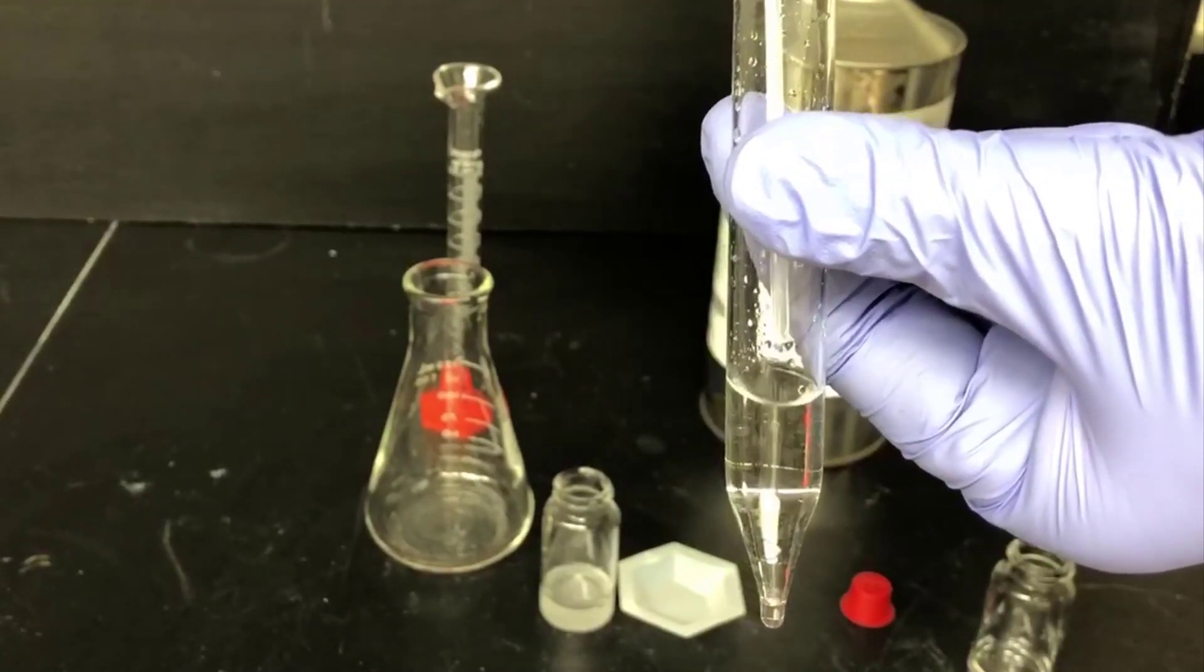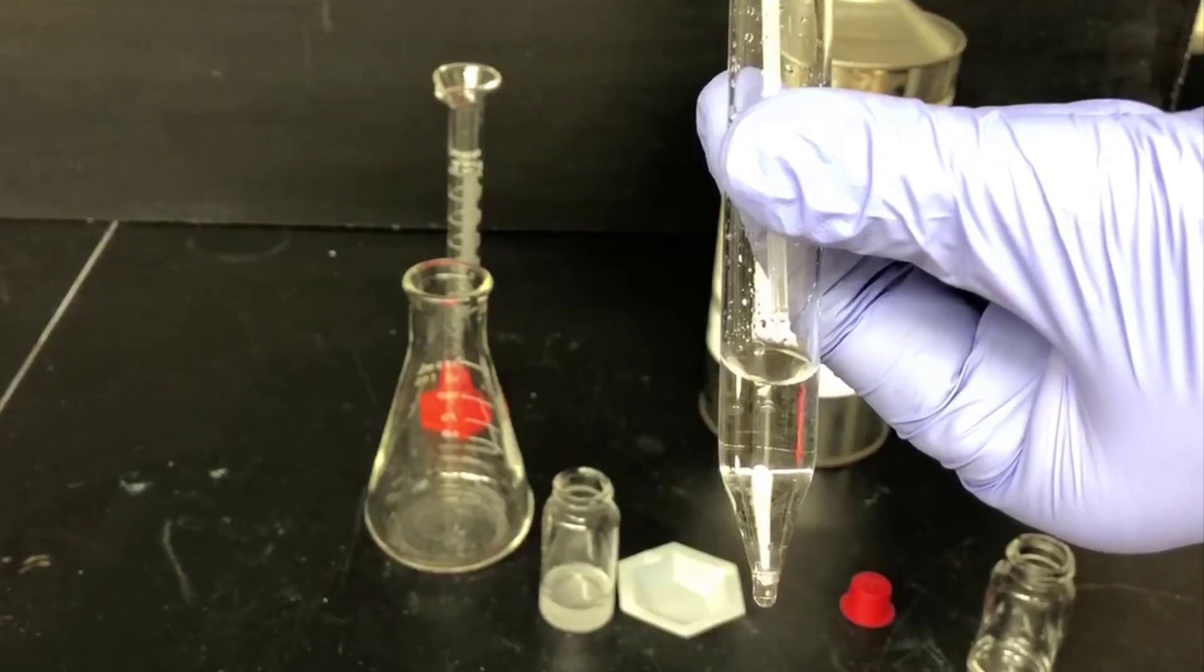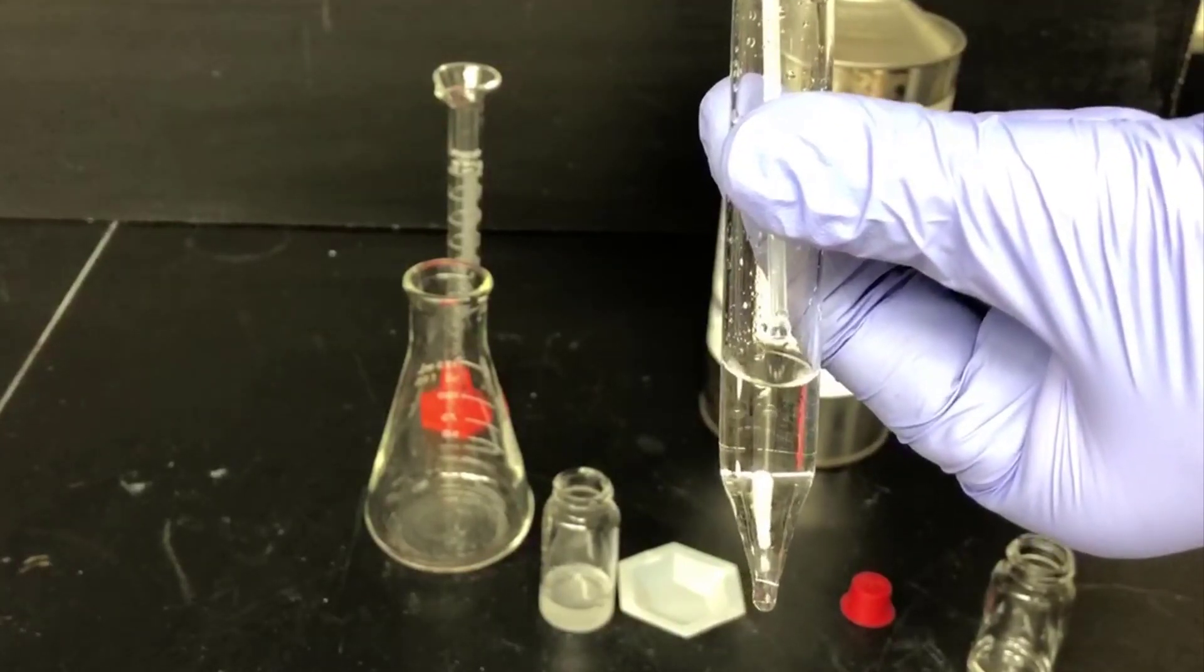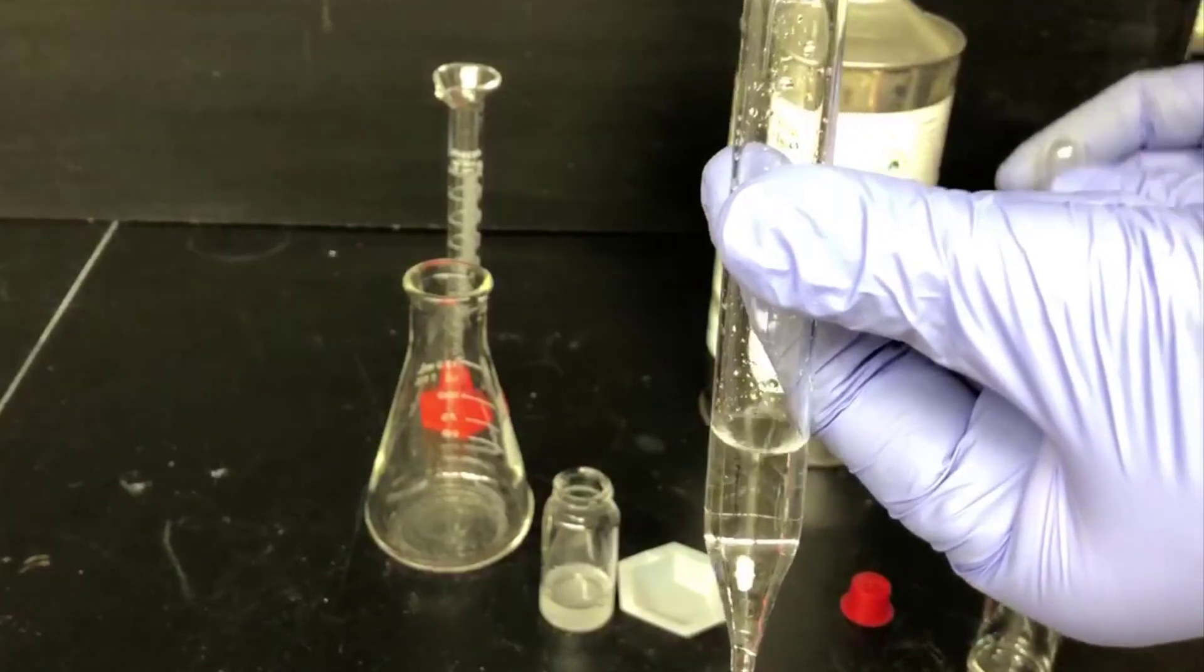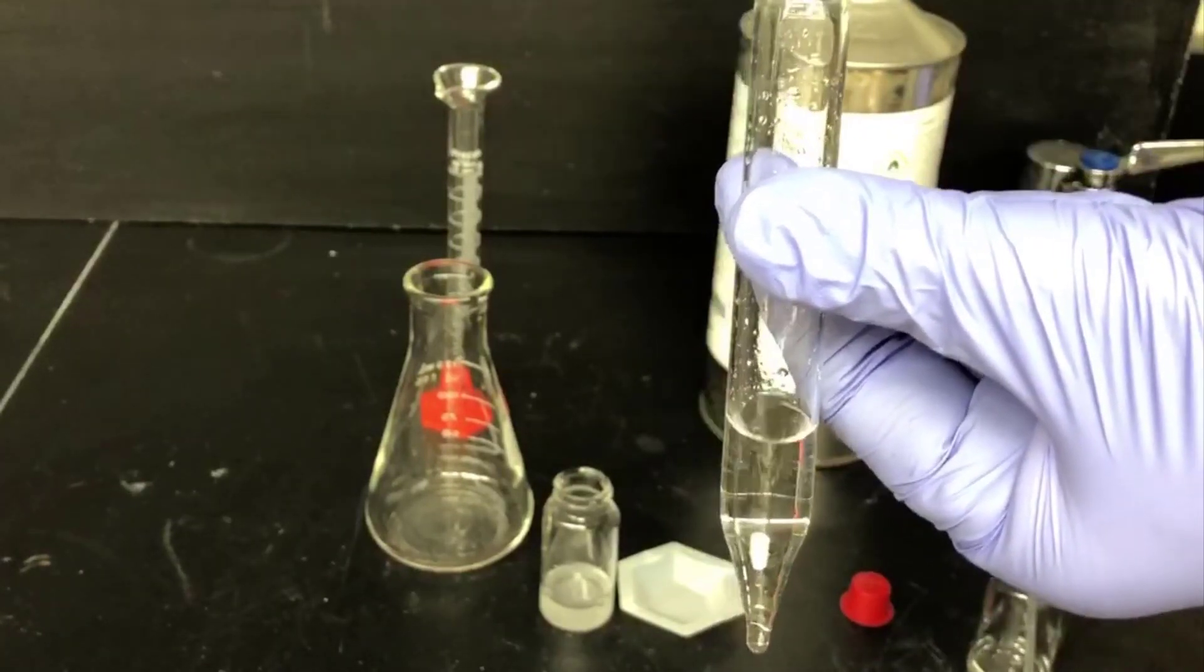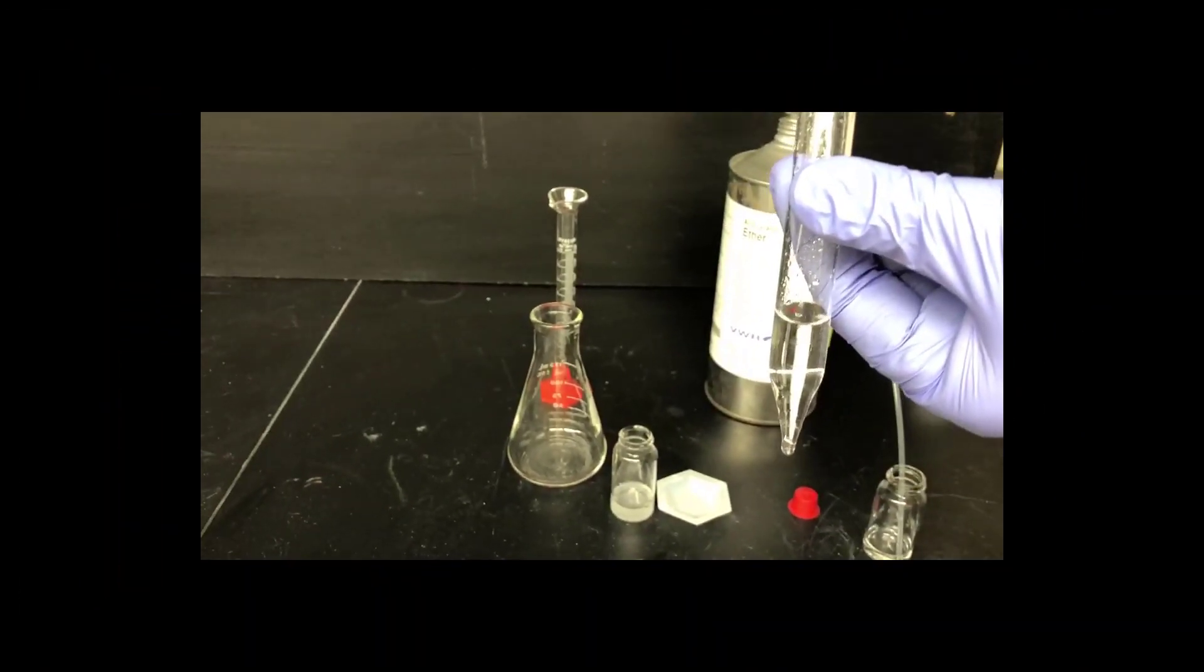If you watch carefully, you'll notice the water droplets are sinking through this layer and forming a new layer on the bottom. This indicates that the layer in the pointed test tube must be the organic layer. That's where the cyclohexanone is because it's more soluble in ether than it is in water.